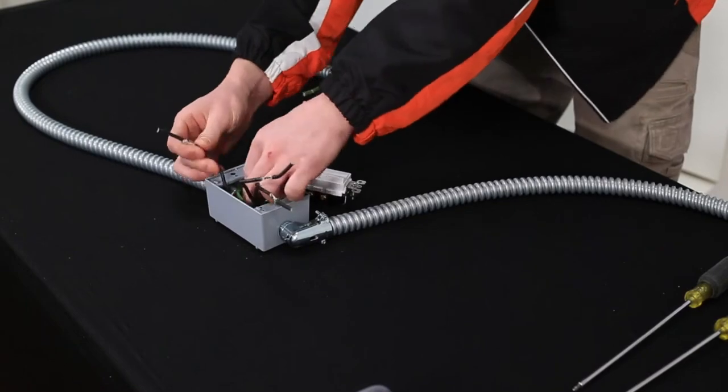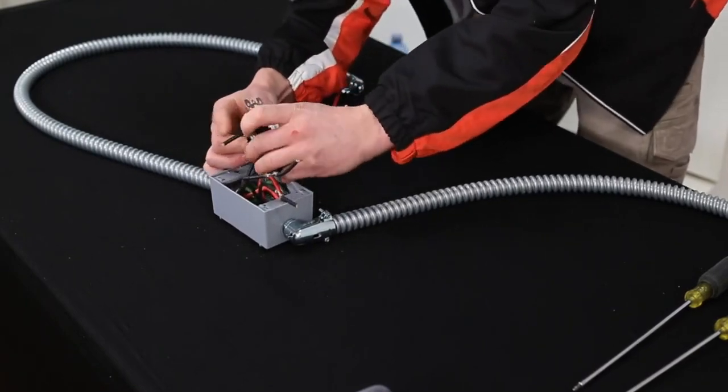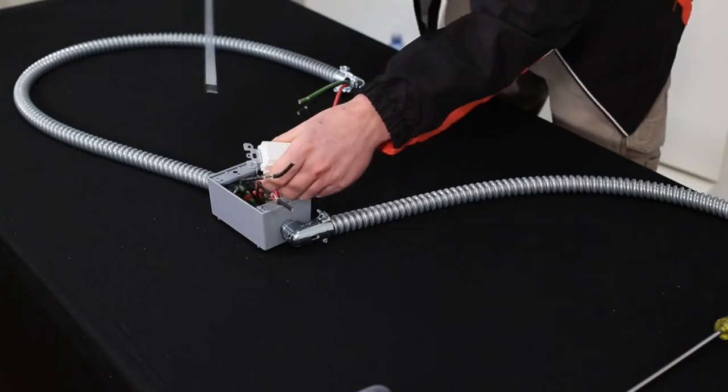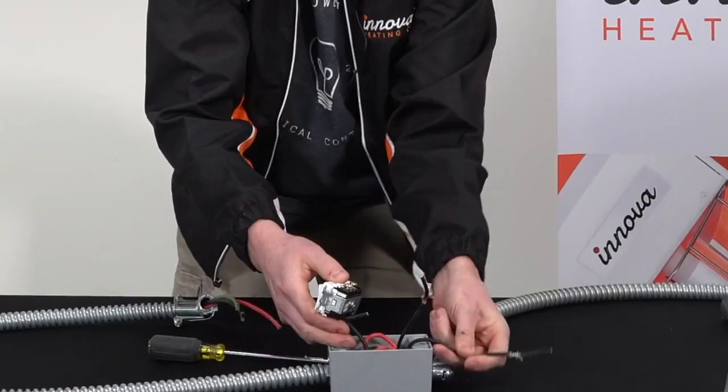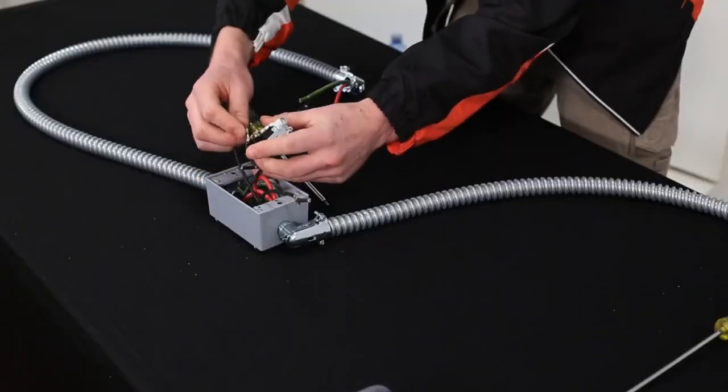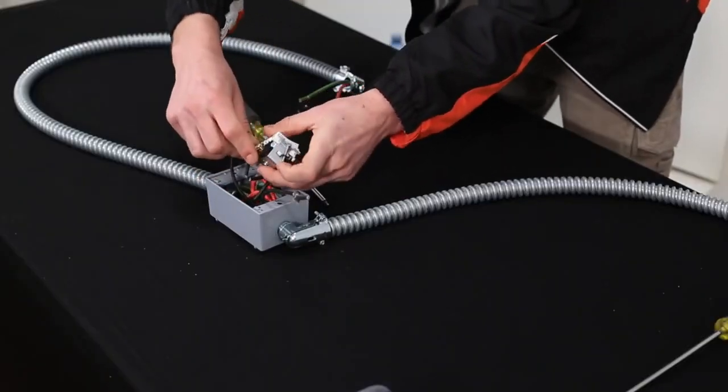So this line side is going to get attached to the black wire, and the two load black wires here are going to get attached to one of the gold screws.